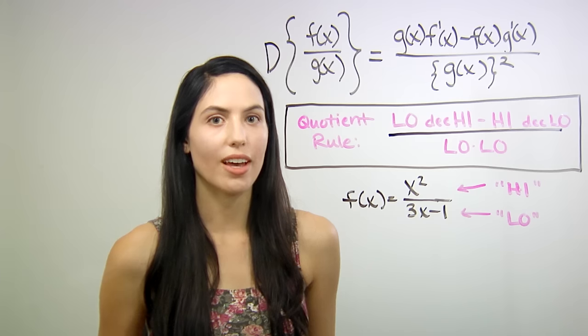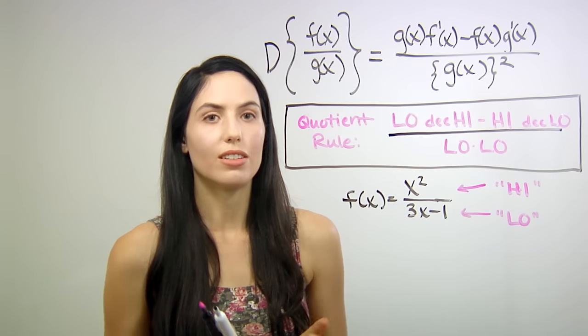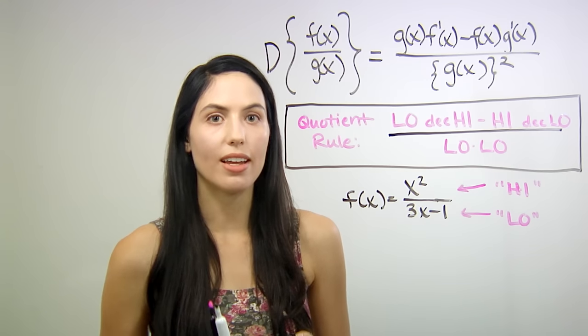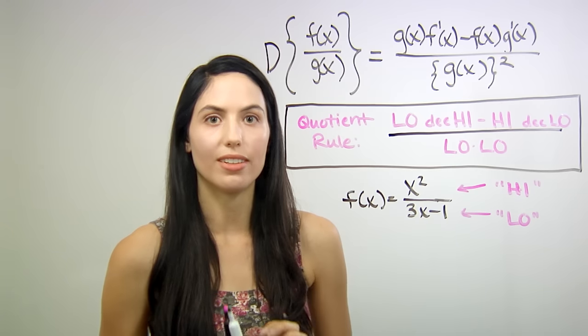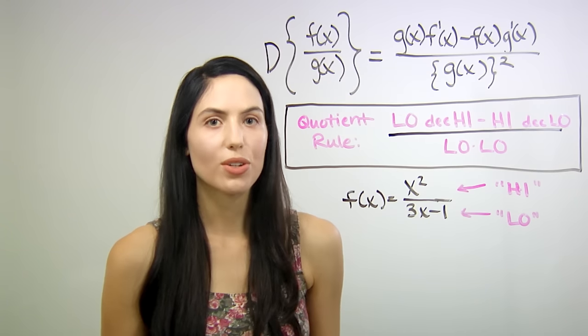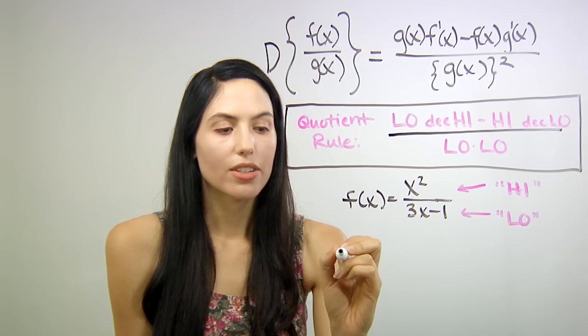So the shortcut to remember is just low d high minus high d low over low low. So let's try it. Our function derivative,